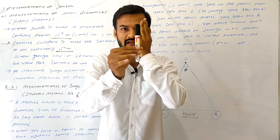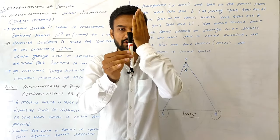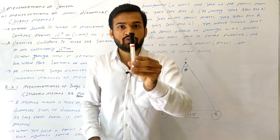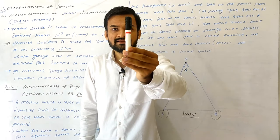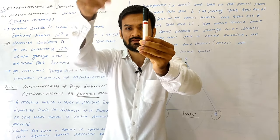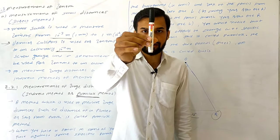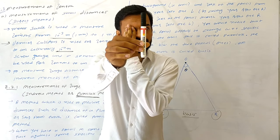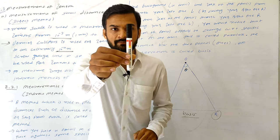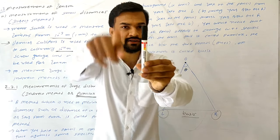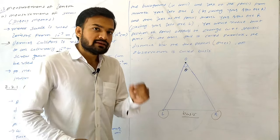Observe the pencil with your left eye first by closing the right eye, and then observe with your right eye by closing the left eye. You will notice that the position of the pencil appears to change with respect to that specific point on the background. This apparent change in position is called parallax.